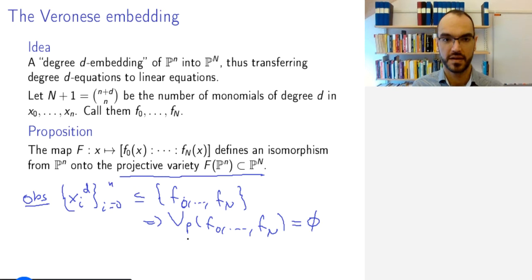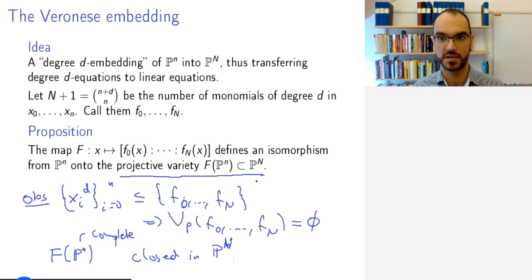And therefore from previous results we know that this defines a morphism F of f_0 to f_N. And the image F(P^n) is complete, so this is closed in P^N. It's a projective variety.